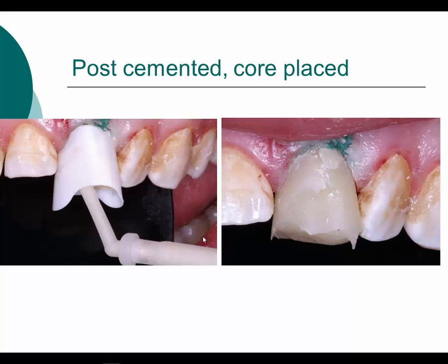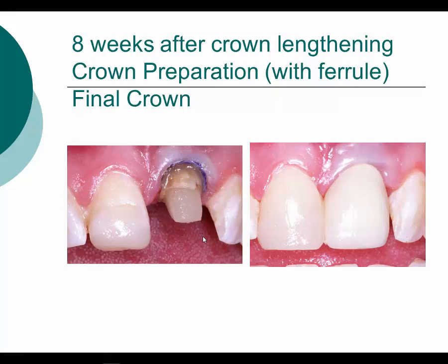Once the composite core is built, I use gingival retraction cord to control the soft tissue, then prepare the tooth for a crown preparation and place a provisional, planning the crown lengthening. For this case I needed bony recontouring with my crown lengthening, not just soft tissue with a laser. Eight weeks after crown lengthening, I refine the preparation — which now has a ferrule effect on tooth structure, not on the composite. After making an impression and fabricating an all-ceramic crown, I have a ferrule design that will contribute to success. Had I used a metal post, I would have had shine-through of the composite core.